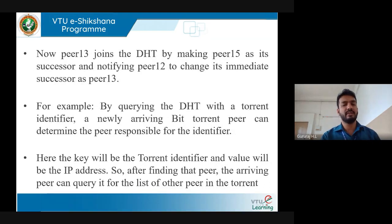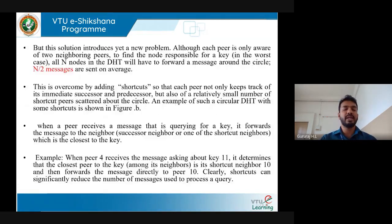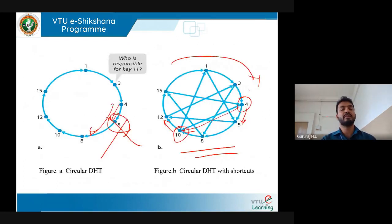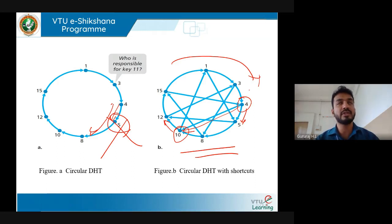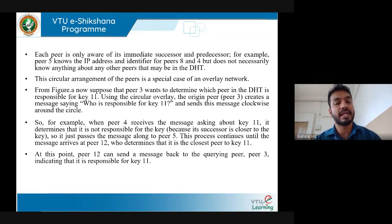In summary, this lecture covered three main topics: performance metrics comparing client-server and peer-to-peer architectures with respect to downloading rate; distributed hash table with two important variants — circular DHT and circular DHT with shortcuts; and peer churn. Thank you. If you have any doubts, feel free to contact me, and I'll see you in the next lecture.